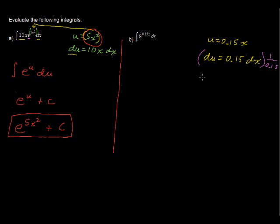And that gives you 1 over 0.15 du equals dx. So I did what I needed to, to substitute in what we have. We just have the dx here, and that's what we have here. So we're going to plug in 1 over 0.15 du in for this dx.